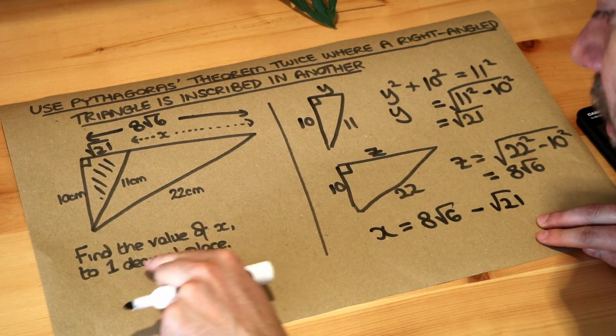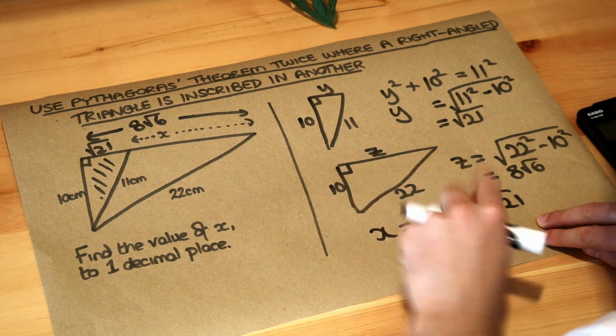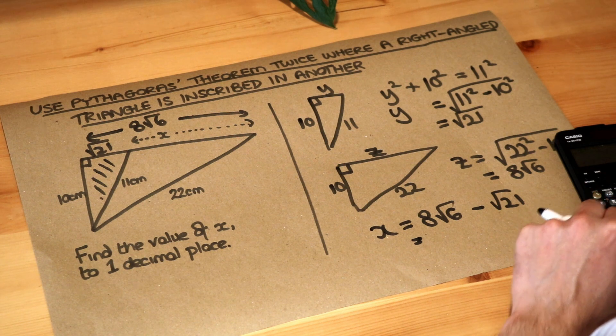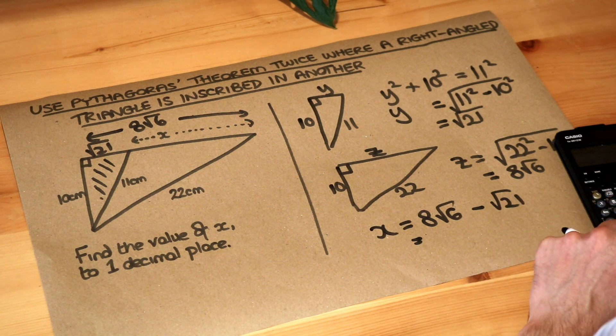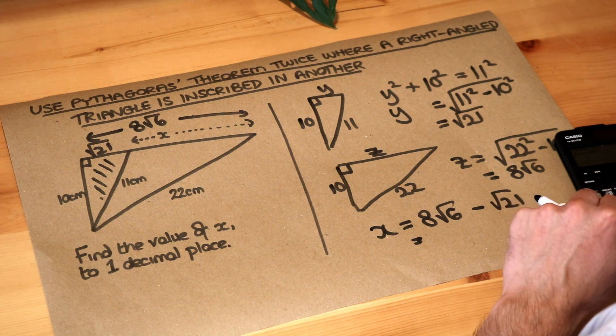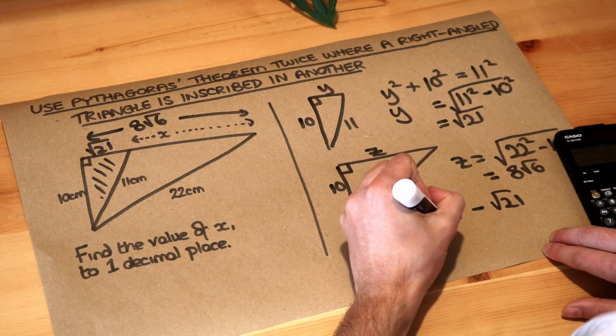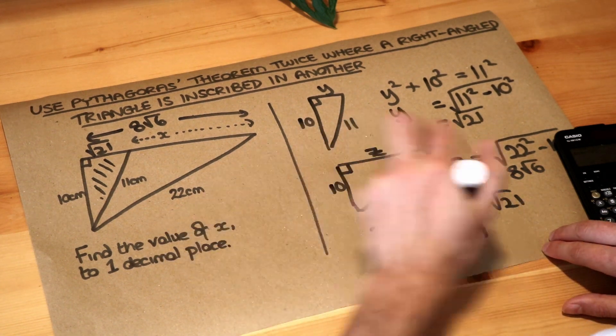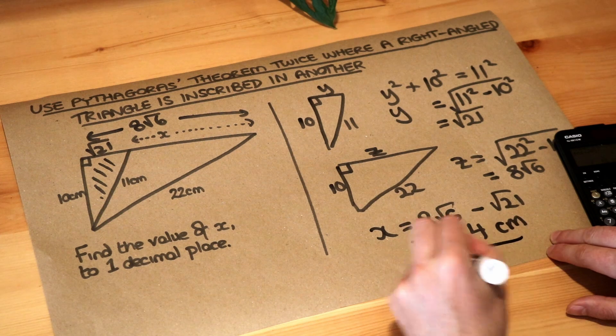Now it does want the answer to one decimal place, it doesn't want an exact answer with square roots in it so we will have to do this on our calculator. So that answer minus root 21 and I need to convert it to a decimal and that gives me 10.4 and what's the unit? It's in centimeters so that is the final answer.